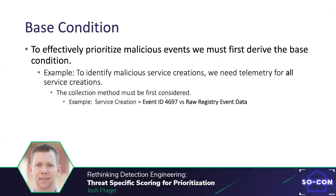To effectively prioritize malicious events, we must first derive that base condition. To begin developing our malicious factors and forming that scoring, we need to collect telemetry for our original data set. This data set is often derived from either our production or testing environment. We will use the example of service creation. The base condition will be collecting telemetry on all created services — both malicious and legitimate. We also need to consider the collection method: identifying service creations via the 4697 event ID, or via the raw registry key creation event.